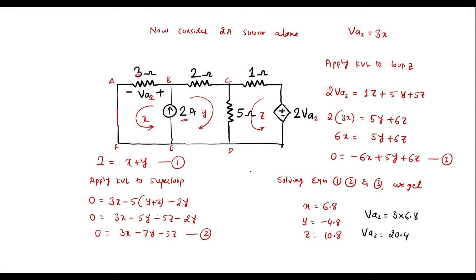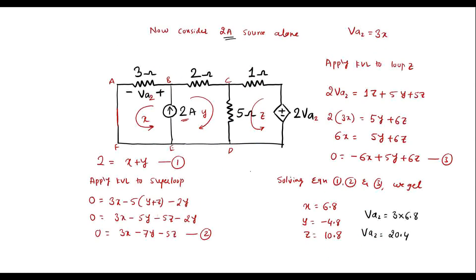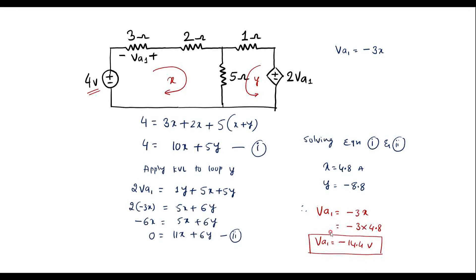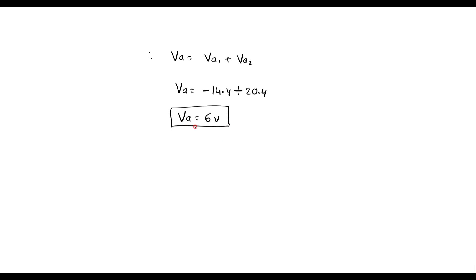Now let us calculate VA. By superposition theorem, VA equals VA1 plus VA2. That is VA equals minus 14.4 plus 20.4, giving VA equals 6 volts. So this is the voltage across the 3 ohm resistor, solved using superposition theorem.